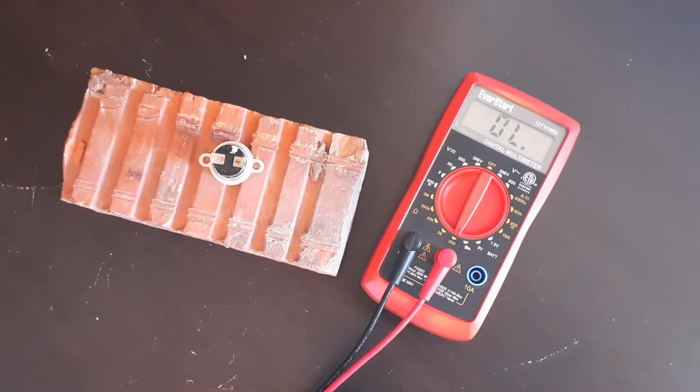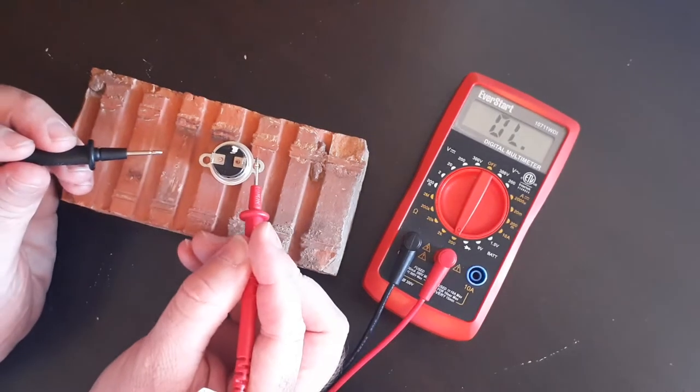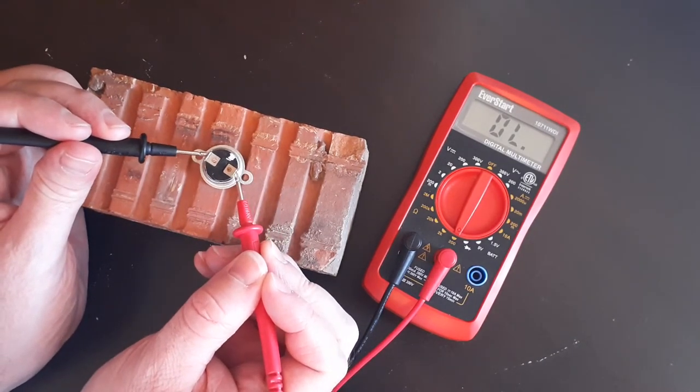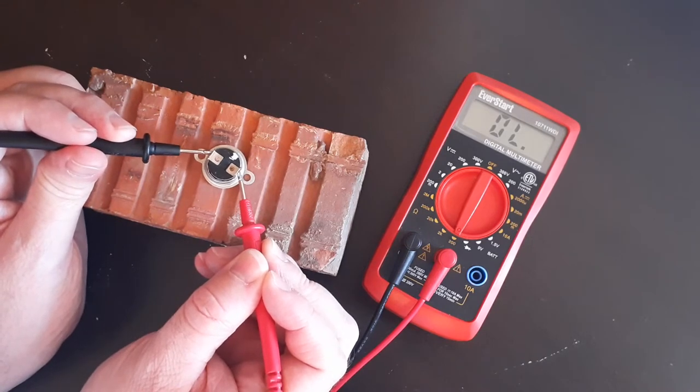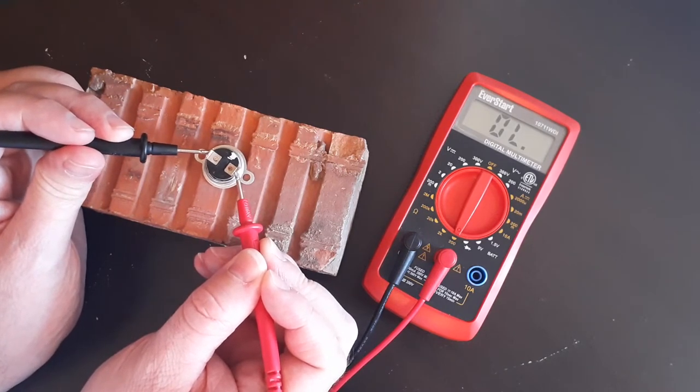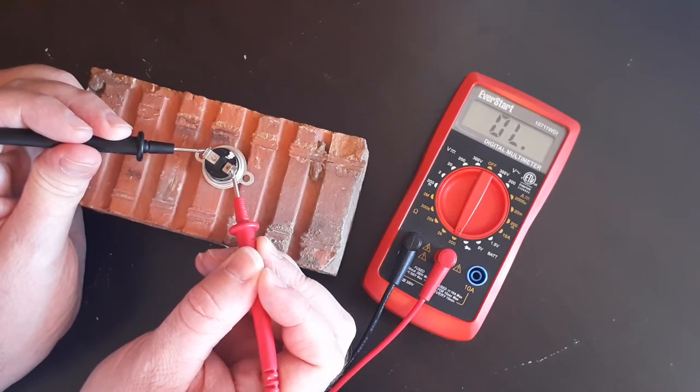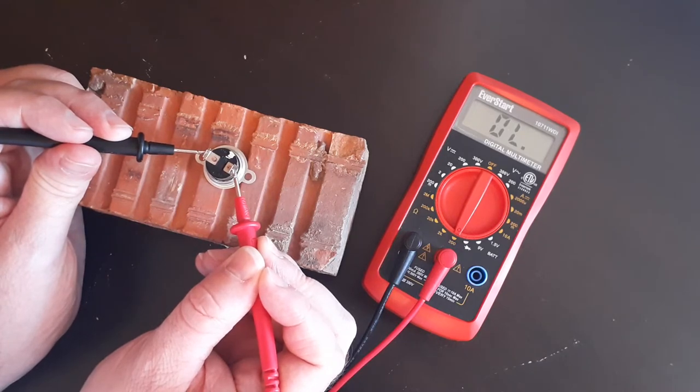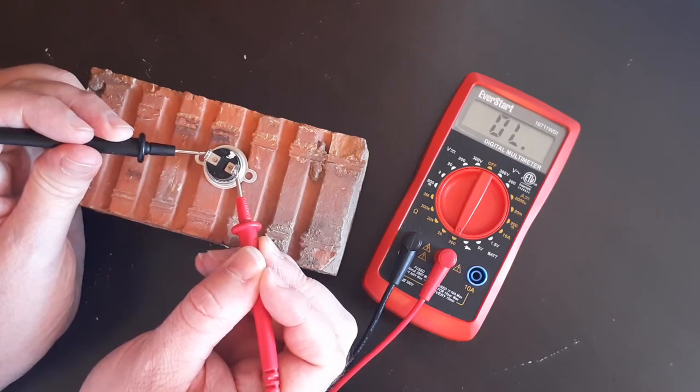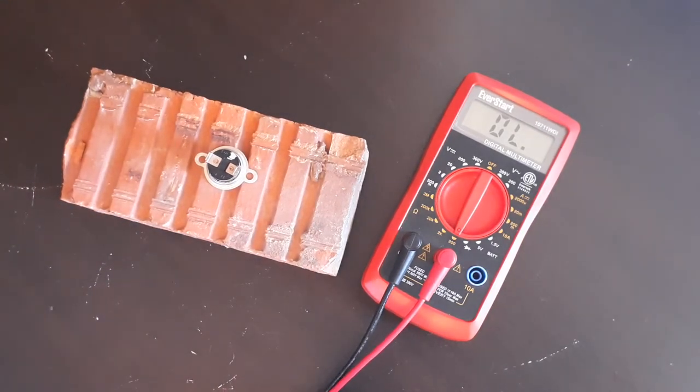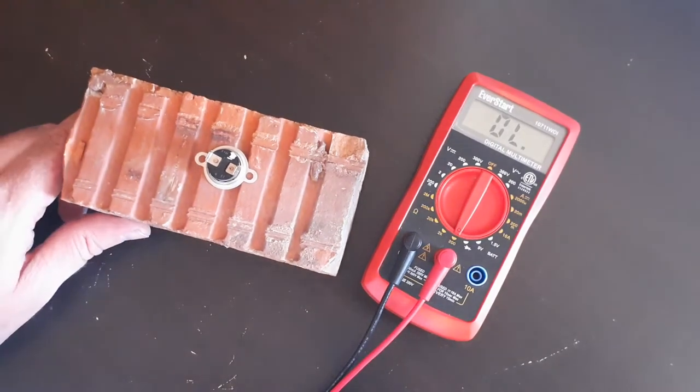There it goes. You saw it jump a little bit. That means that the tabs inside are now open. They are no longer touching each other, so when we touch the leads to this, we do not get a reading. It's still an open line because the leads inside are no longer touching. It's an open line now because we heated it up to the proper degree and the lines inside opened. That's how you do it. So let's go back over it real quick.